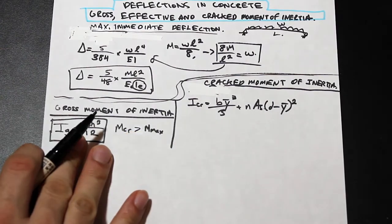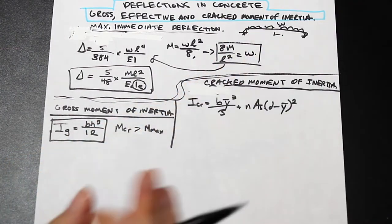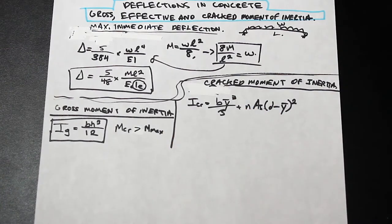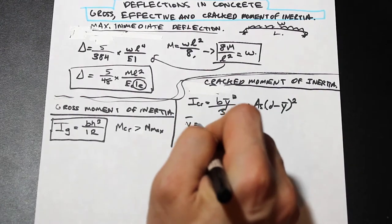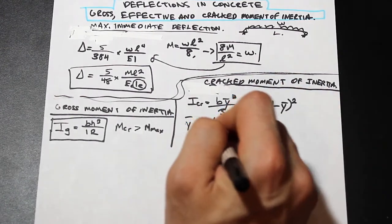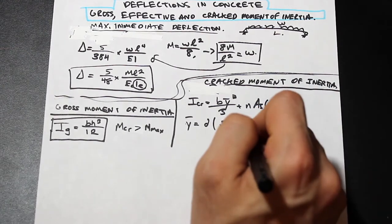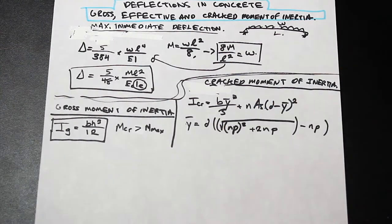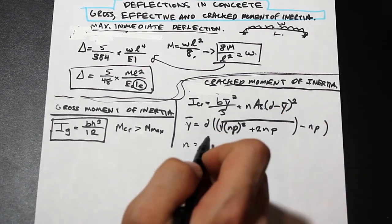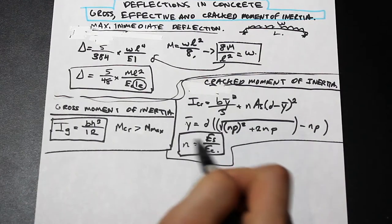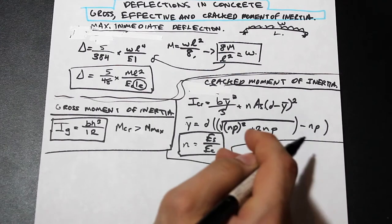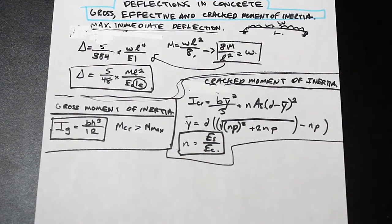When doing deflection calculations based on cracked moment of inertia, we need to find the neutral axis of the transformed section. For a non-cracked section we can use the gross area, but for a cracked section we use this special transformed section. The centroid y-bar is given by a formula involving the reinforcement ratio ρ and the modular ratio n, where n is simply the modulus of elasticity of steel divided by modulus of elasticity of concrete — generally in the range of about 8 to 10.